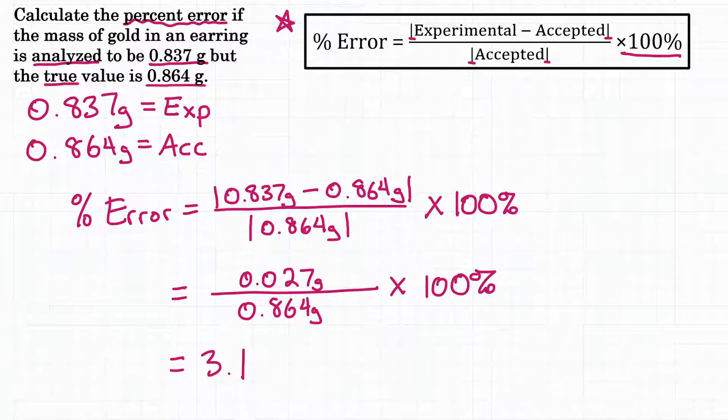Now what are our units? Well, in the fraction, we had grams over grams, so that unit will cancel out, because it's on top and on bottom, and we'll be left with just the percent sign, which makes sense, because we're solving for percent error. So we want our final answer to be a percentage.